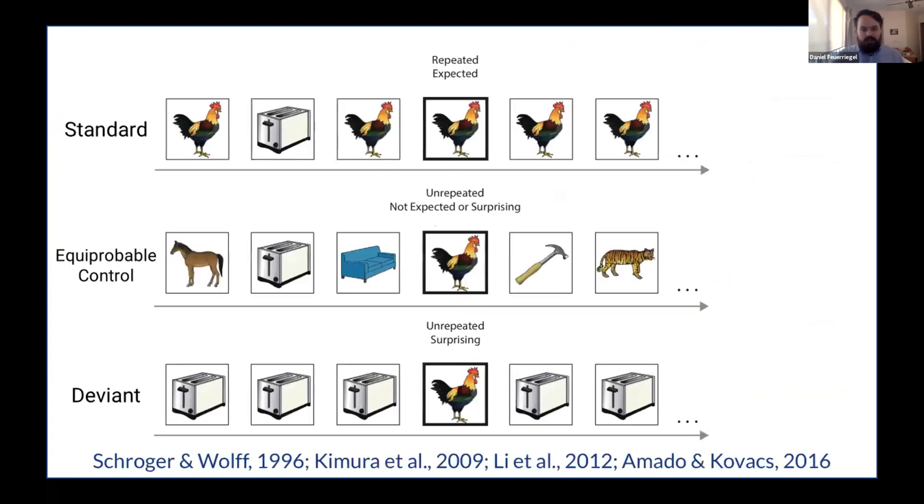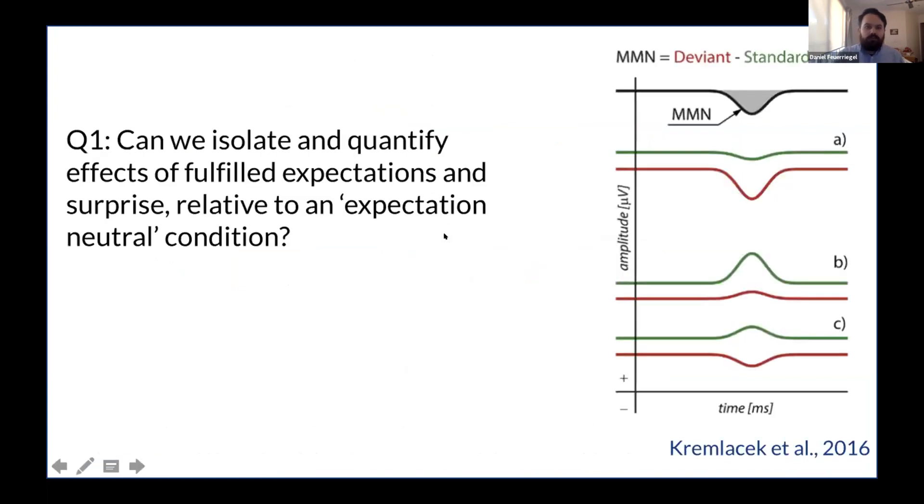And so to sort of boil this down into a series of small hypotheses or easily testable ones, we can think about what is driving this mismatch response or this ERP difference wave between the deviant and the standard stimuli. So for example, we might have a response enhancement for deviant stimuli without much of an effect on the expected stimuli here. We could have a response suppression for the standards, which are repeated and expected without such effects on the deviance. And so we could think of this as repetition effects or expectation suppression, or we could have a mixture of both suppression and enhancement for the standards and the deviance respectively. And so we've gotten partway to answering this question by including equal probable control sequences, whereby a large number of different images are presented within a sequence. So participants can't form expectations for any particular image and none of them are immediately repeated. So by comparing the equal probable control and the deviance conditions, we can get effects of surprise fairly easily. However, effects of expectations seem to be still conflated with effects of stimulus repetition in these designs. And so what we wanted to do is to try to isolate and quantify effects of fulfilled expectations and surprise relative to some sort of expectation neutral condition in a cleaner way.